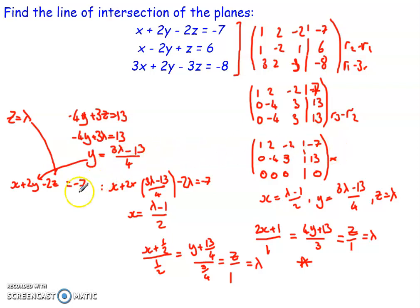It seems like a complicated process but it's not too bad. The most involved step is manipulating the matrix, but just think of it like a set of simultaneous equations — you can rejig it row by row, similar to that, until you get the setup that you want in order to solve the system.